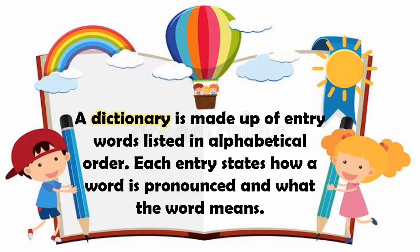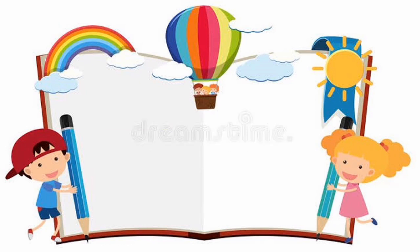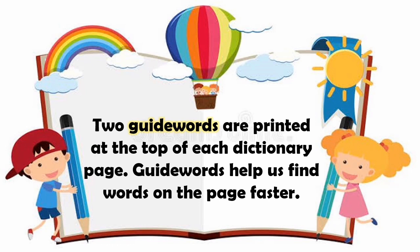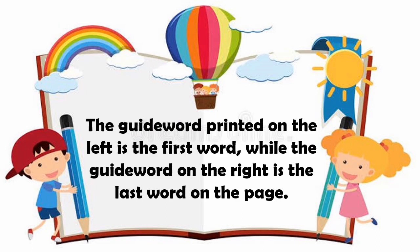A dictionary is made up of entry words listed in alphabetical order. Each entry states how a word is pronounced and what the word means. Since words are arranged alphabetically, locating a word is easy. Two guide words are printed at the top of each dictionary page. Guide words help us find words on the page faster. The guide word printed on the left is the first word, while the guide word on the right is the last word on the page.